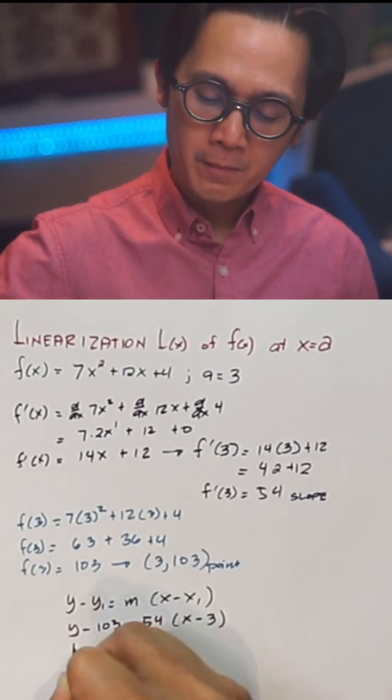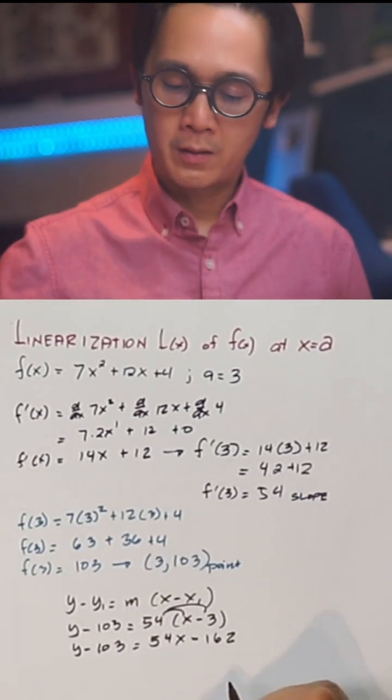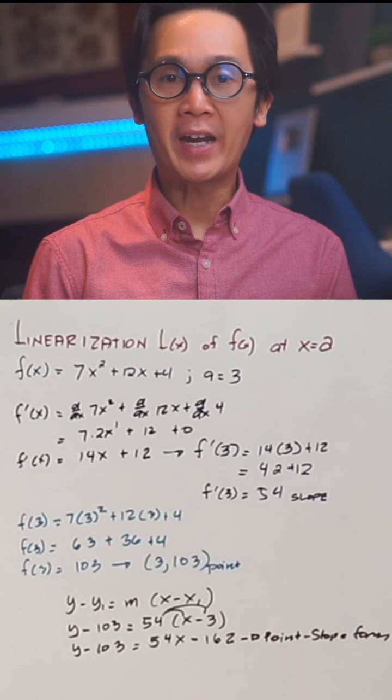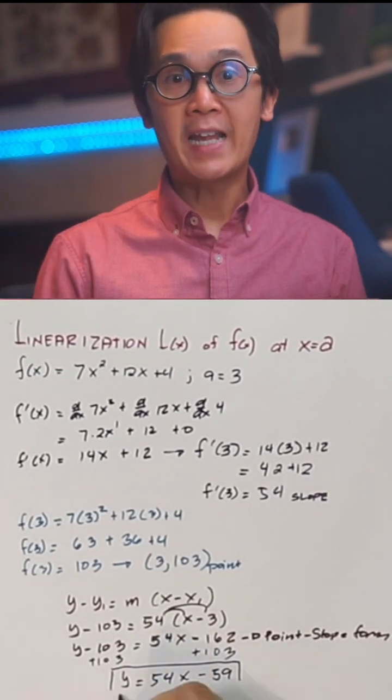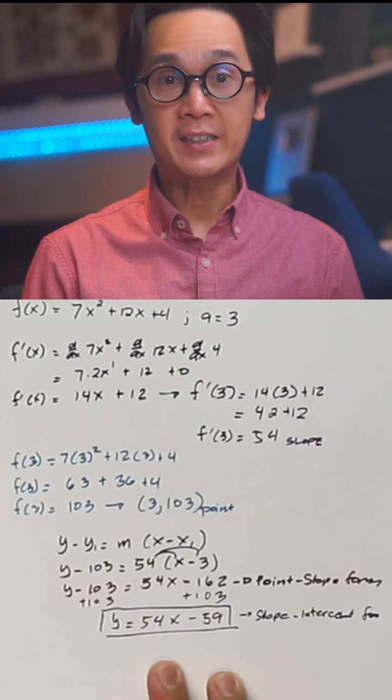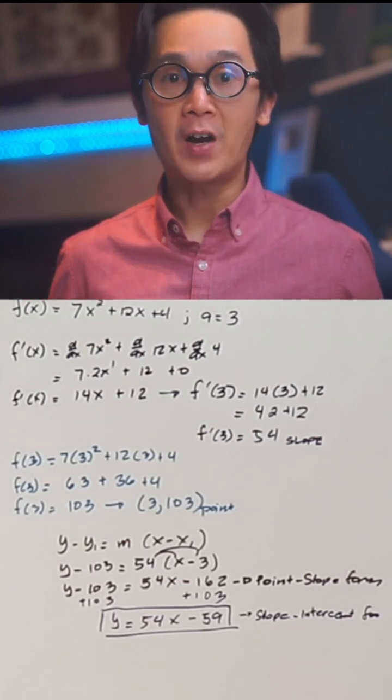Plugging in the value of x sub 1, y sub 1, and m, we now have the point slope form. Finding the slope intercept form, let's find the value of y. And this is now the equation of the tangent line at x equal to 3 or the linearization of the function.